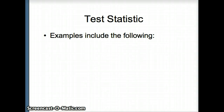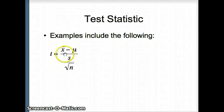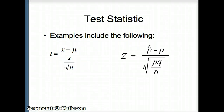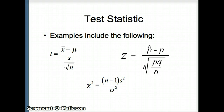To do this analysis, we compute test statistics — the numbers we analyze to see how extreme our values are. For comparing means, we use the t statistic: x-bar minus mu divided by s over root n. For proportions, we use z: p-hat minus p divided by the square root of pq over n. And for variance, chi-square equals n minus 1 times s squared over sigma squared. We'll look at various versions of these test statistics in later presentations.